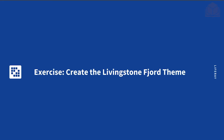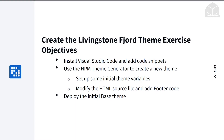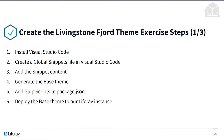Let's do an exercise where we will create the Livingston Fjord theme. At the end of this exercise, we will have learned the following things: we will have installed Visual Studio Code and added code snippets, learned how to use the npm theme generator to create a new theme, set up some initial theme variables, modified the HTML source, and added footer code. Finally, we'll know how to deploy the initial base theme.